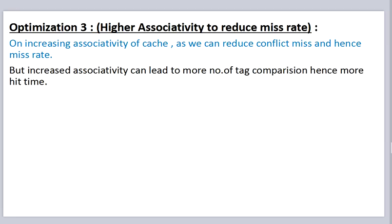The third optimization is higher associativity to reduce miss rate. By increasing the associativity of cache, we can reduce conflict misses and hence miss rate. But increased associativity can lead to a greater number of cache comparisons, hence more hit time.